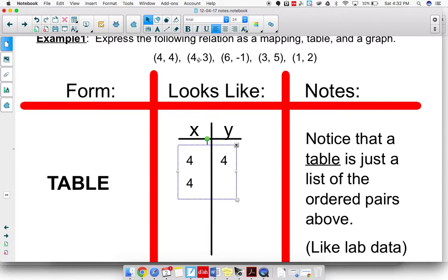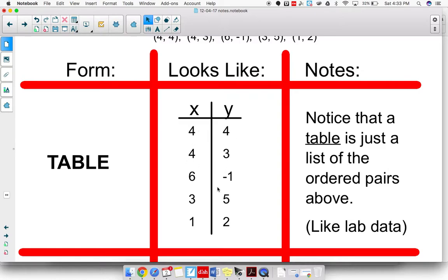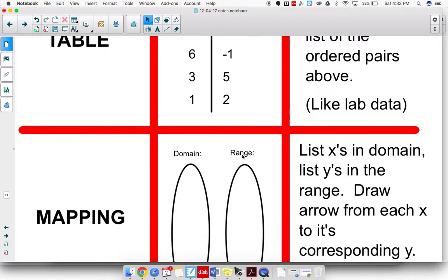The next ordered pair has an input of 4 and an output of 3. No, that's not a typo. You'll see why that duplicate X value exists. An input of 6 is going to give us an output of negative 1. An input of 3 gives us an output of 5. And the last ordered pair up there had an input of 1 with an output of 2. So again, it is literally just putting your data into columns. And every X has a corresponding Y that matches up with it.